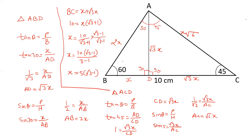Now we calculate the final values. AB equals 2x, which is 2 times 5(root 3 minus 1), giving us 10(root 3 minus 1). AC equals root 6x, which is root 6 times 5(root 3 minus 1), giving us 5 root 6(root 3 minus 1).